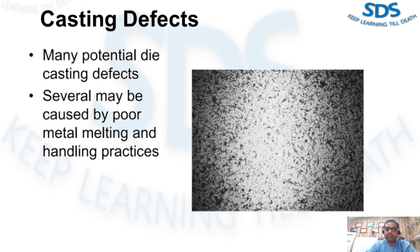After this video, you can identify the major types of casting defects caused by poor metal melting and handling practices. You can also explain the causes of those defects, and use this information to improve or maintain casting quality in your facility.